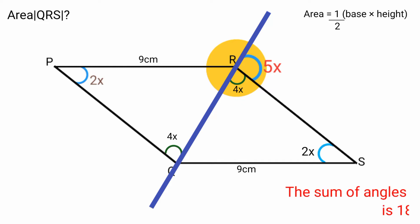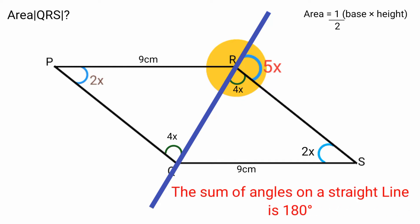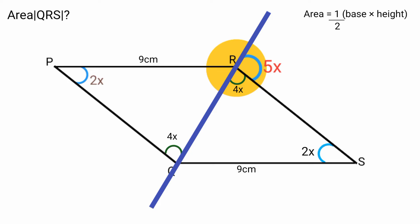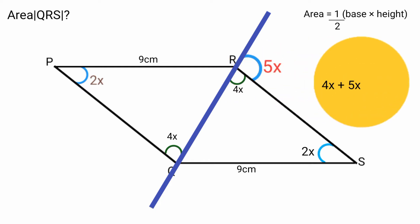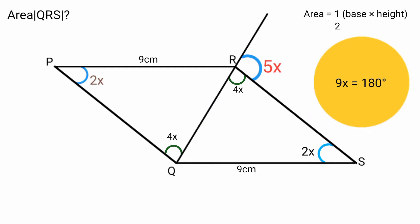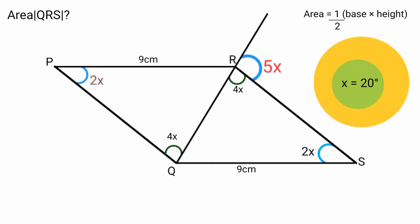Now, angle 5x and angle 4x lie on the same straight line, and the sum of angles on a straight line is 180 degrees. So we form the equation: 4x + 5x = 180 degrees. That gives 9x = 180 degrees. Dividing both sides by 9, x equals 20 degrees.